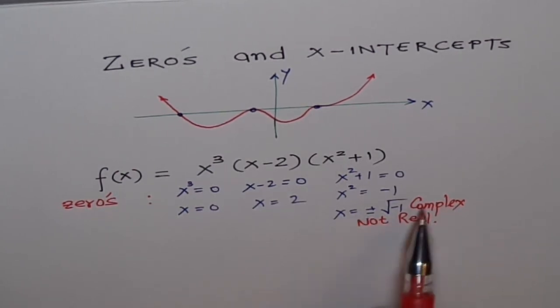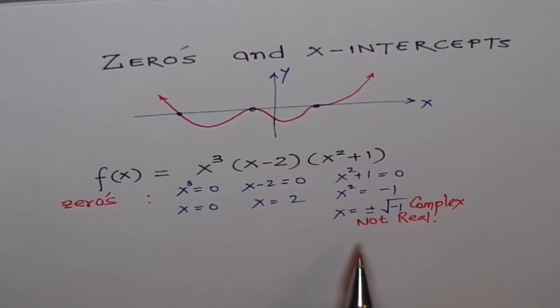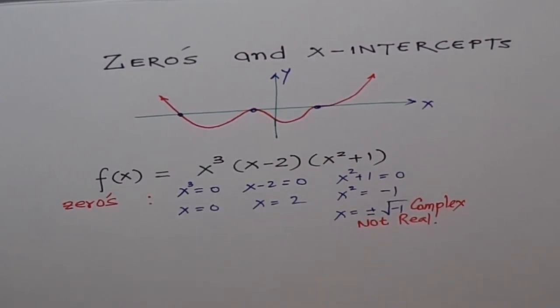Also notice that these two complex zeros will always be in conjugate pairs, plus and minus i, same value. Do you get it? So, one difference which you just found out here is that the zeros could be real or complex.